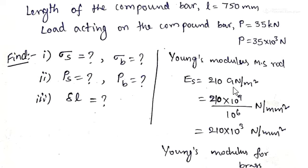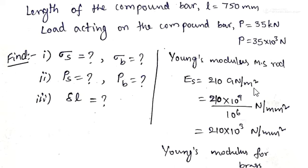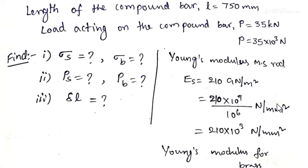Converting GN/m² to N/mm²: giga means 10⁹, so GN converts to N by multiplying by 10⁹. One meter = 1000 mm = 10³ mm, so 1 m² = 10⁶ mm². Dividing 10⁹ by 10⁶ gives 10³. Therefore E_S = 210×10³ N/mm².